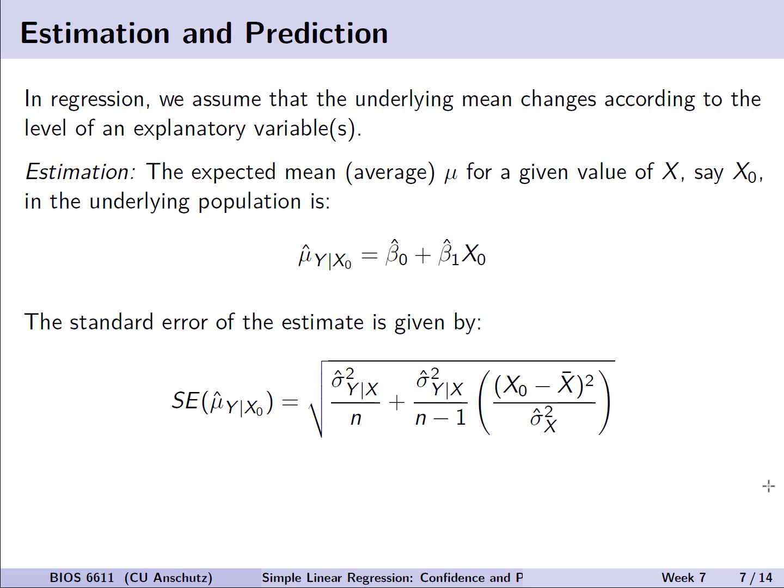So we first have this idea that we're generally starting with is estimation. The expected mean or average, mu, for a given population value of x, say x0, and the underlying population will be reflected by our predicted regression line, where again we're looking at the average for a population given that x is equal to x0. We can just plug then in x0 value, then multiply it by beta 1 hat, and add the intercept beta 0.